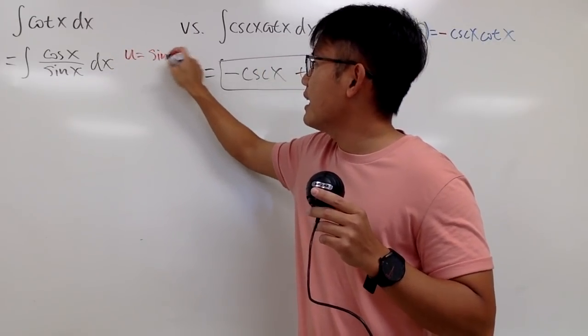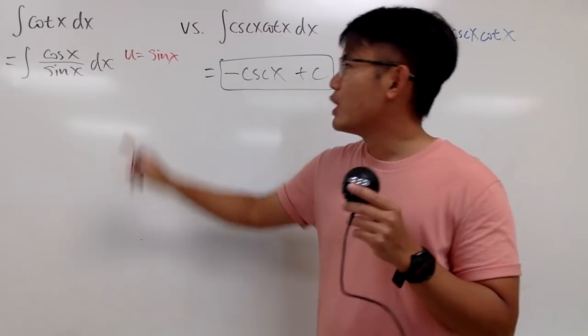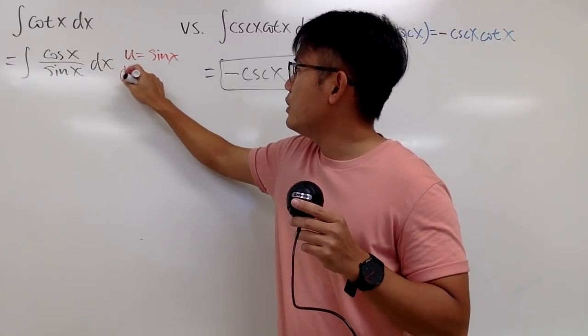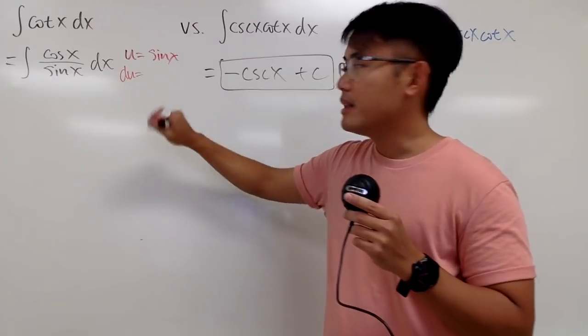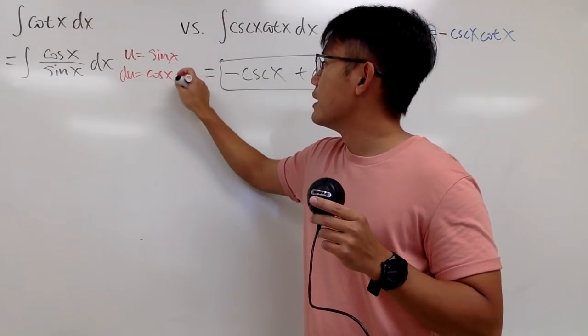Because when I differentiate this, I get du equal the derivative of sine x is cosine x dx, and you see this is exactly on the top.